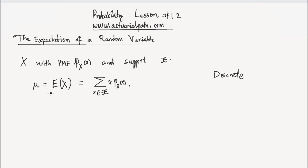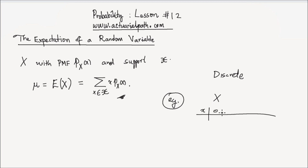To make this formula more concrete, let me give you a simple example. Let's say we have a random variable x that takes values 0, 1, or 2. It takes a value of 0 with probability 0.6, a value of 1 with probability 0.3, and a value of 2 with probability 0.1. These sum to 1: 0.6 plus 0.3 plus 0.1 equals 1.